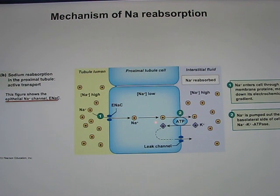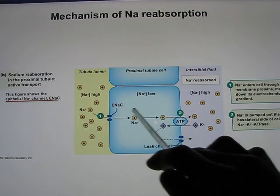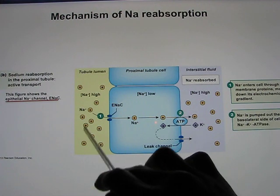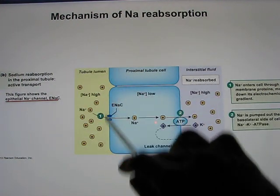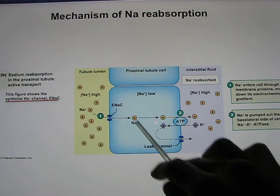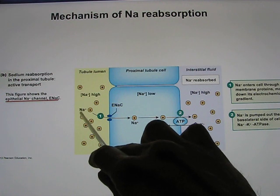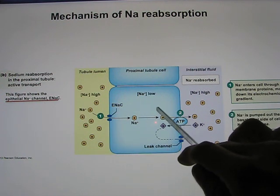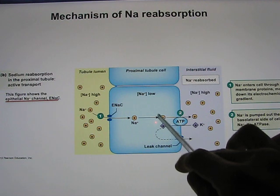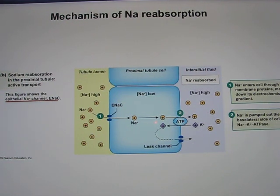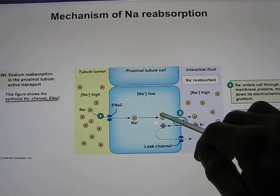Let's look at the molecular mechanism of sodium reabsorption. Sodium is high in the lumen, low inside the cell, and high in the interstitial fluid. On the apical membrane, sodium moves from high to low through a sodium channel. On the basolateral side, you need to pump sodium from low to high using active transport — the sodium-potassium pump is placed on the basolateral membrane.